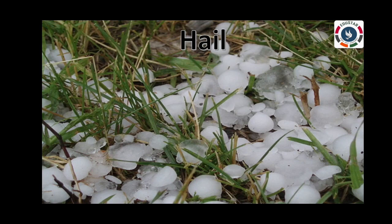Hail. When rain drops pass through a very cold region of the atmosphere, they freeze to form pellets of ice. These pellets of ice are called hail and fall to the ground.